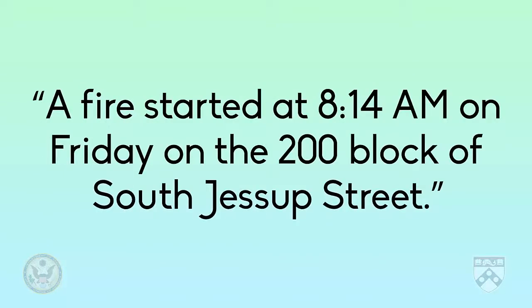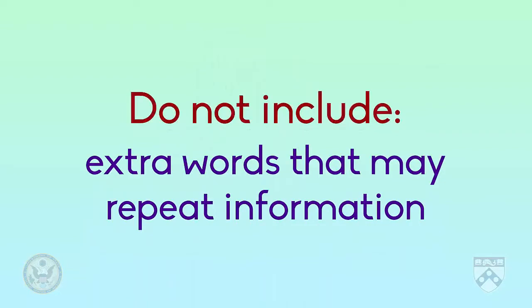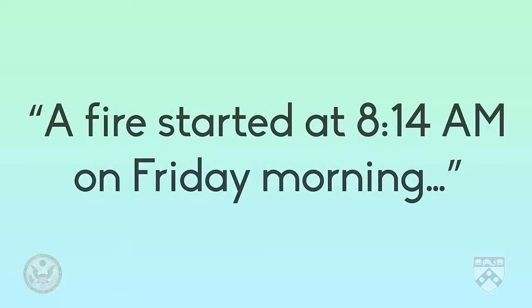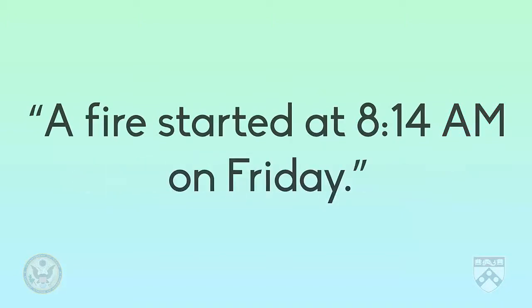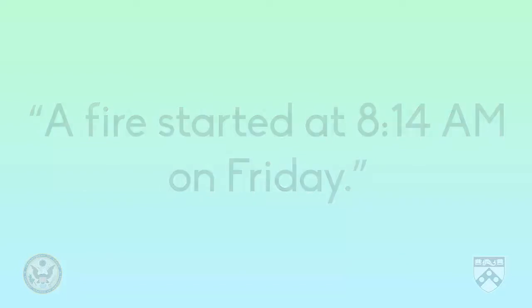'A fire started at 8:14 a.m. on Friday on the 200 block of South Jessup Street.' Starting a summary news lead this way gives the reader the most important information first. In addition to descriptive words, summary news leads should also not include extra words that may repeat information. For example, what if the lead instead said 'a fire started at 8:14 a.m. on Friday morning'? Because we said a.m., we know that it's morning time. Remember, we want summary news leads to be specific, but also brief.